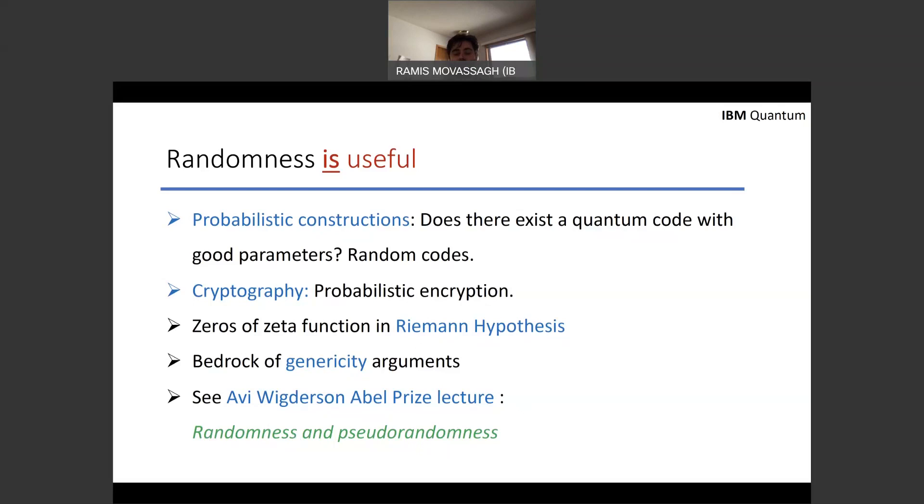So then you ask, well, would be great if we could actually use random quantum circuits in real applications. Let me just showcase that, indeed, in quantum cryptography very recently, we were able to use random quantum circuits to propose the so-called quantum Merkle trees. And we could also recently show, so the previous work was with Lee Ji-Chen. And more recently, we proved that you could use random circuits. I came up with two algorithms for preparing GHZ states on noiseless and noisy random quantum circuits.